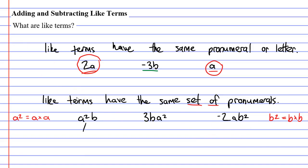So, if we look at the first term, a squared b, this can actually be written as aab, because a squared means that there are two a's. The second term, 3ba squared, could be rewritten as 3baa, since a squared means there are two a's. And the third term can be rewritten as negative 2abb, since b squared means there are two b's.